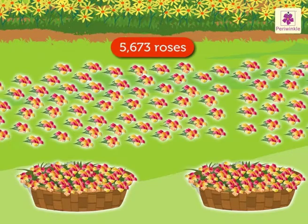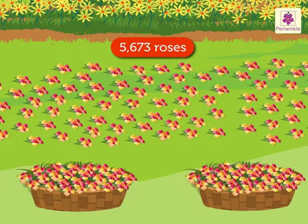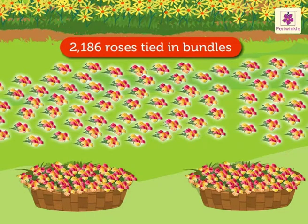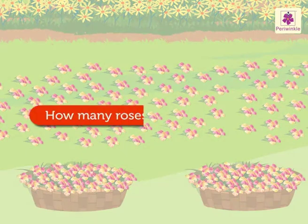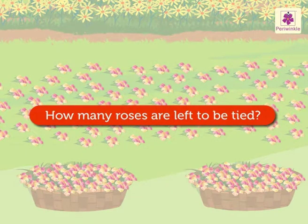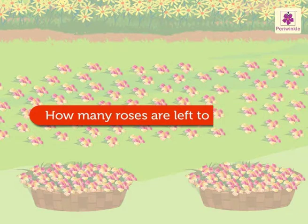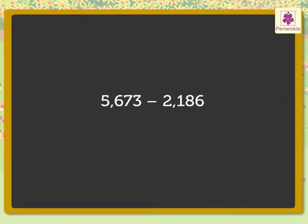There are 5,673 beautiful roses, out of which 2,186 roses have been tied in bundles. Let us find out how many roses are still left to be tied. Here we can get the answer by finding the difference between 5,673 and 2,186.